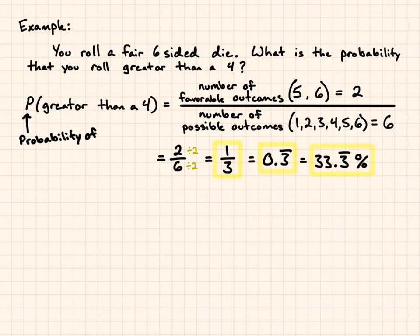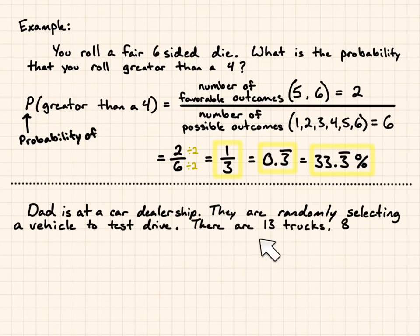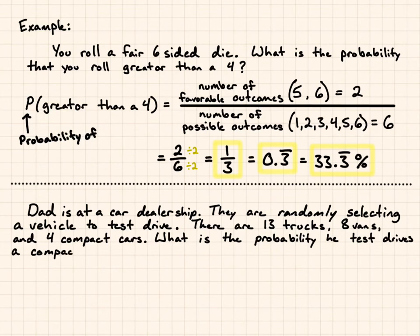Now, let's try another example to show, once again, that it's just the number of favorable outcomes divided by the number of possible outcomes. Dad is at a car dealership. They are randomly, that means equally likely, selecting a vehicle to test drive. There are 13 trucks, 8 vans, and 4 compact cars. What is the probability he test drives a compact car?